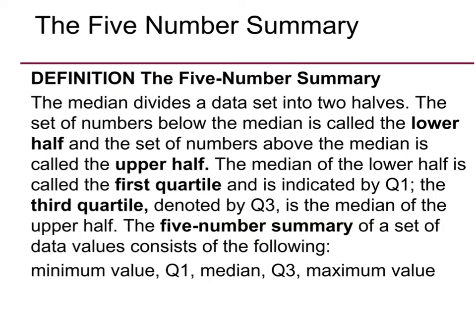The next topic is the five-number summary. The median divides the data set into two halves — the lower half and the upper half. If you split each half in half again, you find the first quartile Q1 and the third quartile Q3. The median of the lower half is Q1 and the median of the upper half is Q3. The five numbers are: the minimum, Q1, the median (also called Q2), Q3, and the maximum.